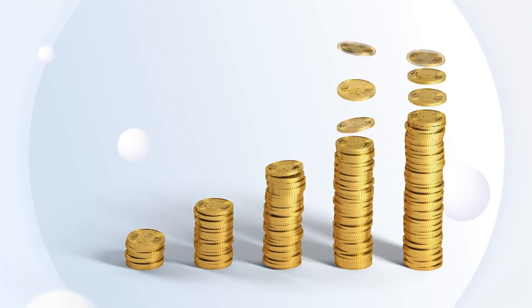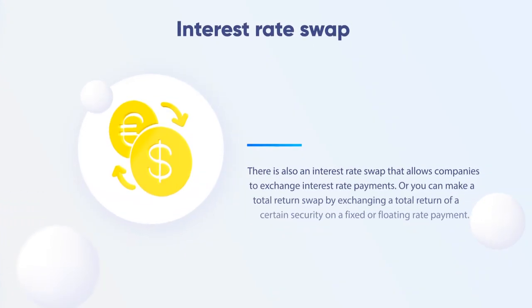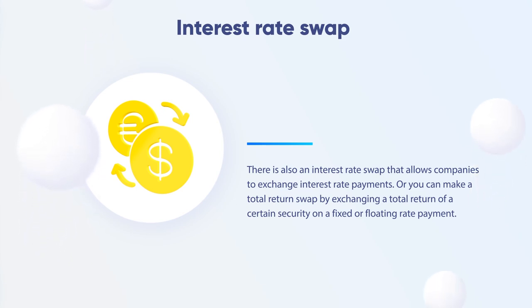What's his interest? Your future income plus a certain rate. That's a commodity swap. There is also an interest rate swap that allows companies to exchange interest rate payments. Or you can make a total return swap by exchanging a total return of a certain security on a fixed or floating rate payment.